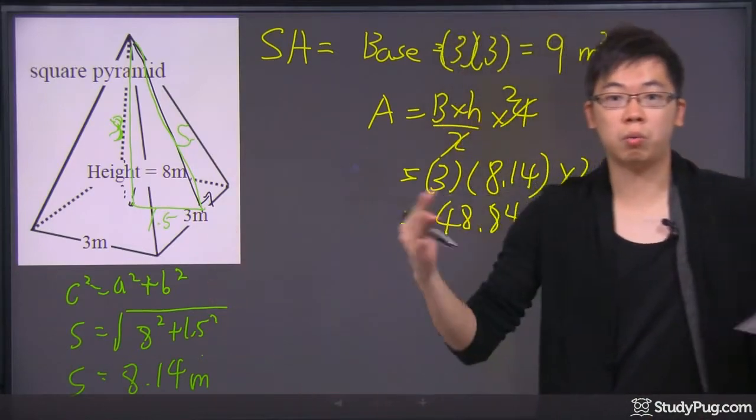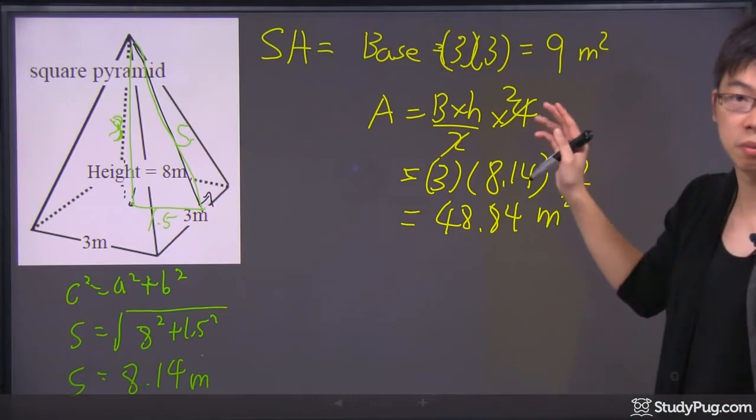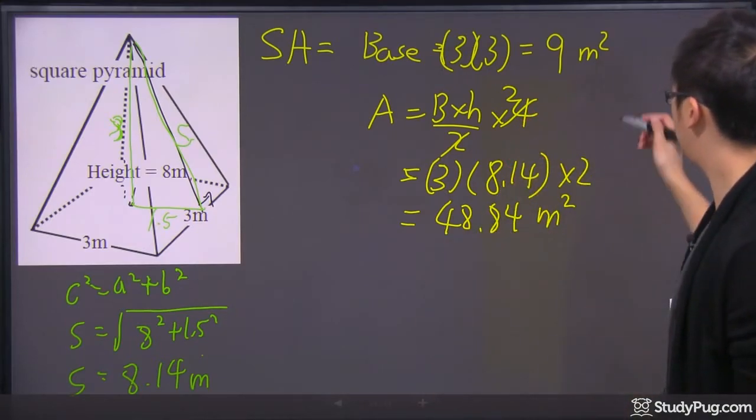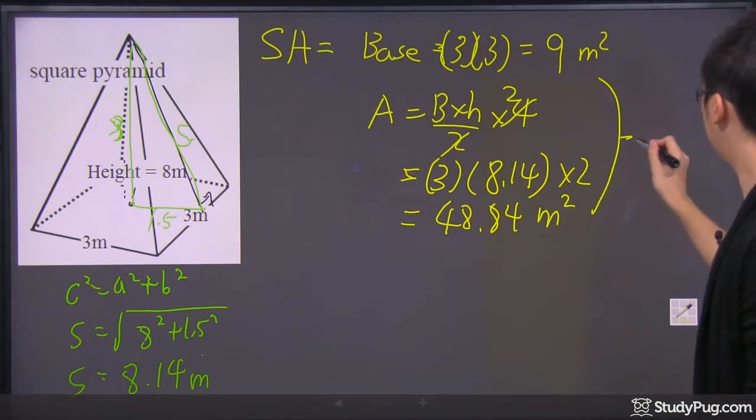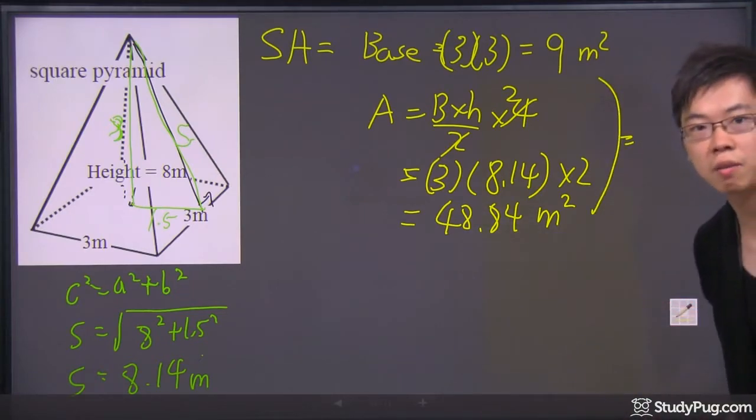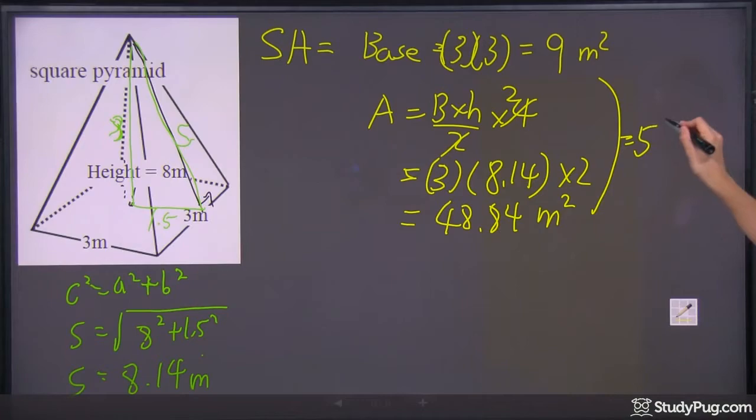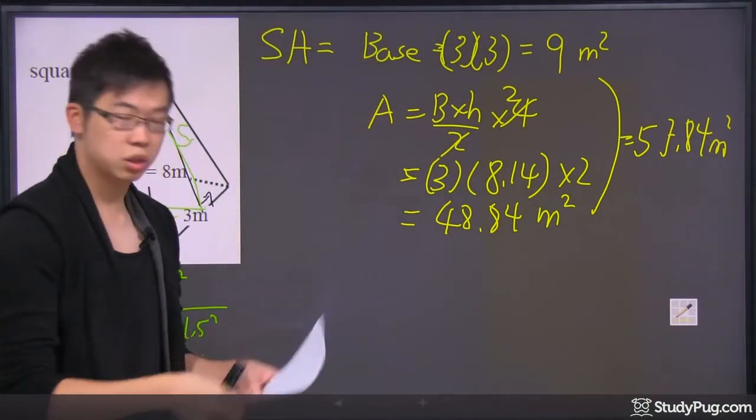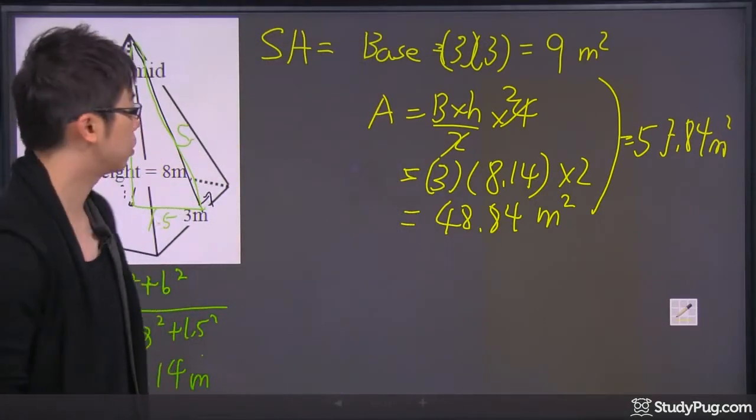So, the total surface area of the whole thing is just the sum of the 9 plus the 48.84. So, I got 57.84 meter square. So, that's the total surface area. The next part to this question is to figure out the volume.